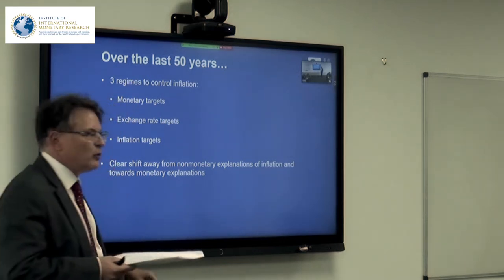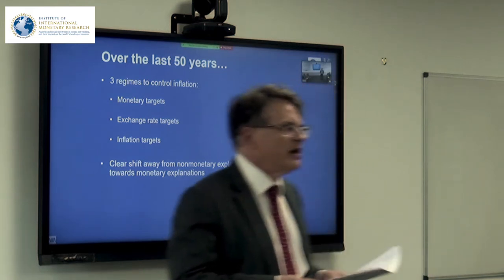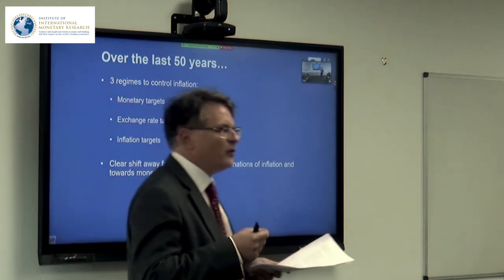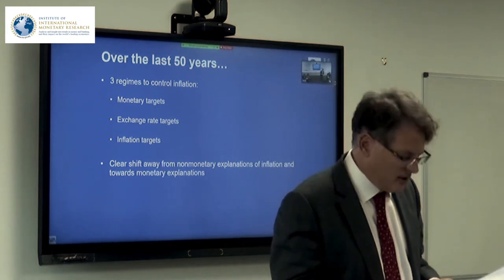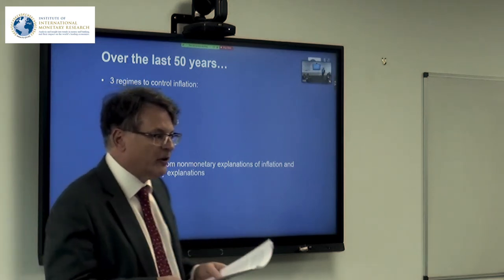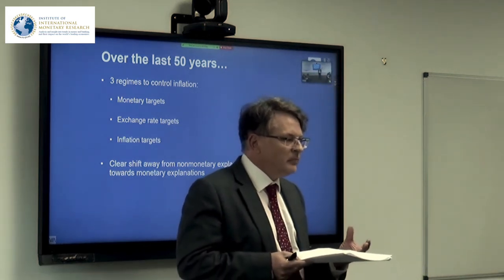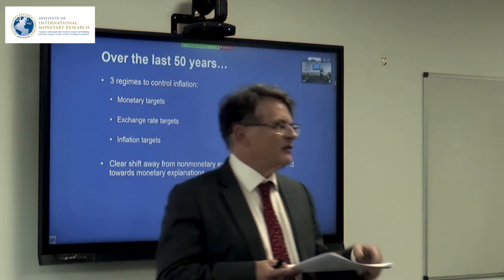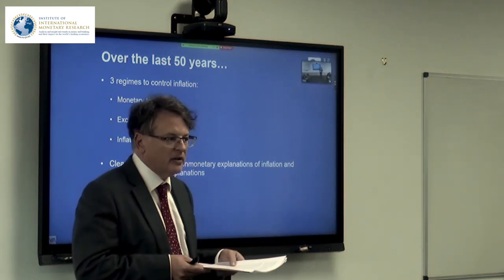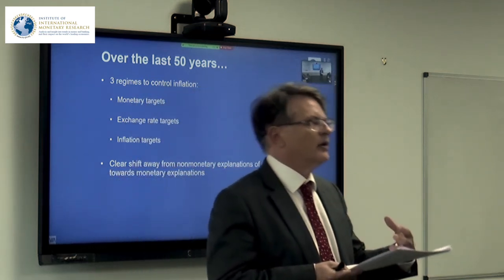There has been a clear shift away from non-monetary explanations of inflation to explanations where money matters. For the bulk of the post-1945 British experience, money did not seem to matter much at all. That changed when Margaret Thatcher came to power in 1979. There were occasions prior to that when money seemed to matter a little more — after the devaluation of sterling when the IMF came in, and the 1976 sterling crisis when money supply targets were introduced to placate financial markets. But underlying it all, there was still a view that inflation was caused by things other than growth of the money supply.